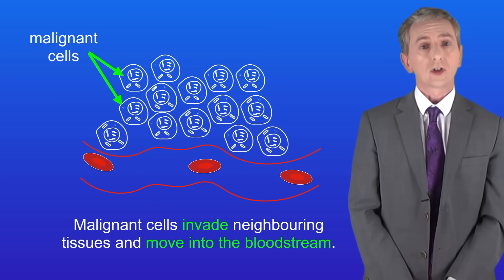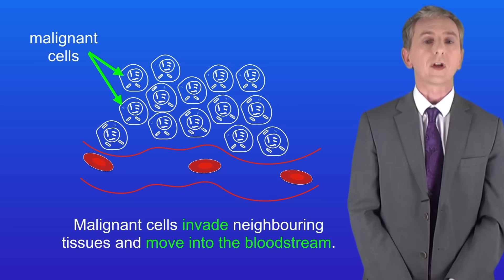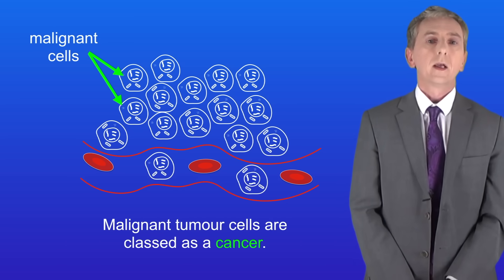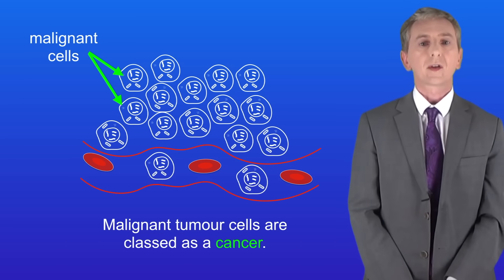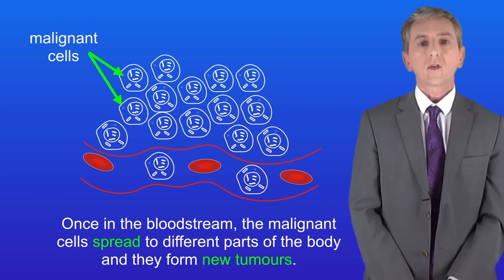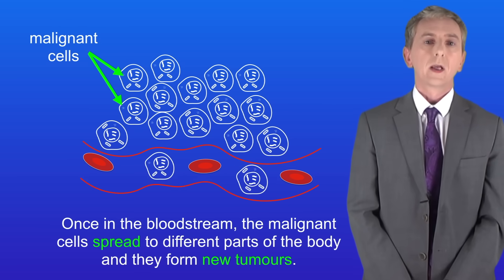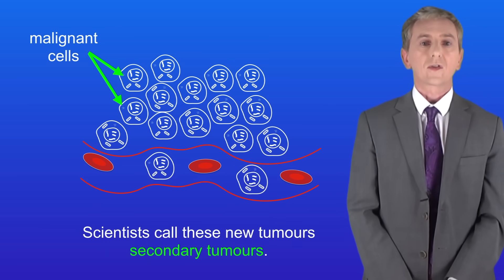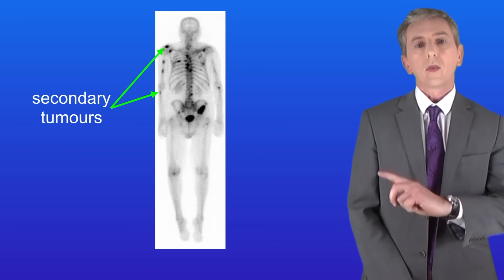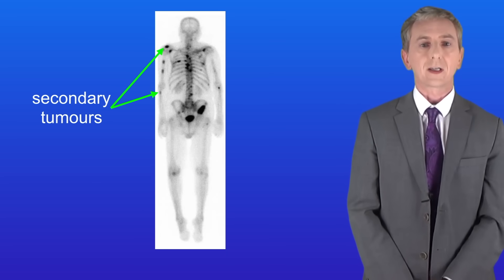Malignant tumours are different to benign tumours. Malignant cells invade neighbouring tissues and then they move into the bloodstream. A key fact is that malignant tumour cells are classed as a cancer. Once in the bloodstream the malignant cells spread to different parts of the body and form new tumours, which scientists call secondary tumours. This shows the secondary tumours in a patient with prostate cancer.